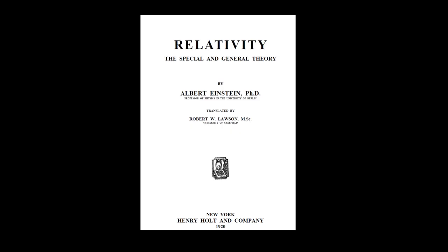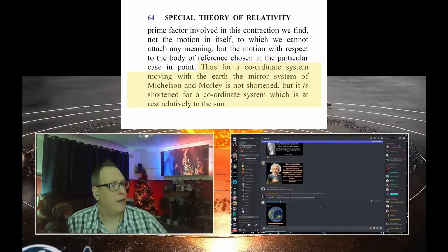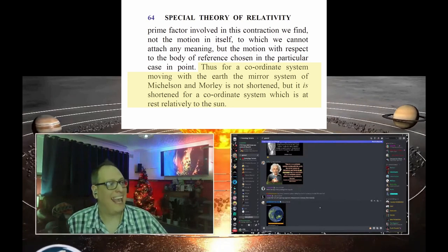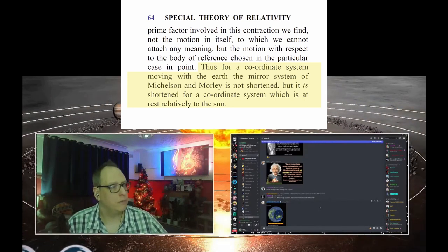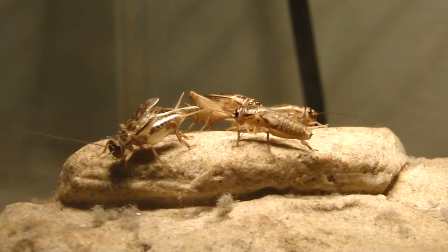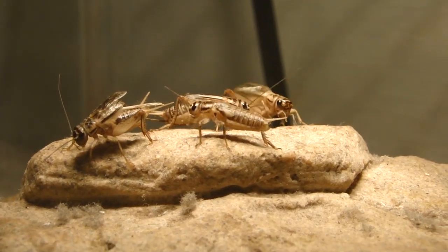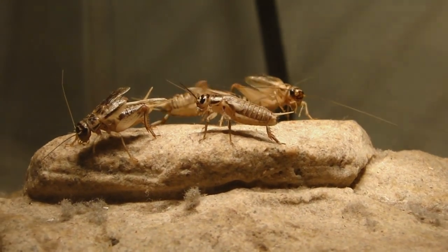In his book 'Relativity: The Special and General Theory,' Einstein wrote at the end of paragraph 16: 'Thus, for a coordinate system moving with the Earth, the mirror system of the Michelson-Morley is not shortened.' Why did he say that? When FTFE cited this quote, Witsit reacted — and then disappeared.